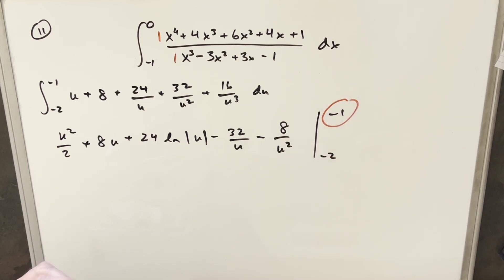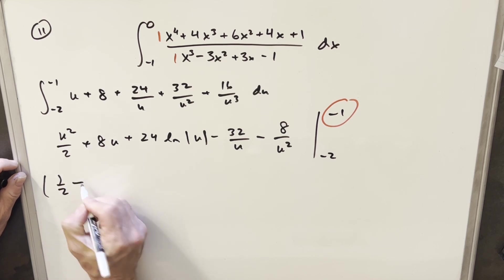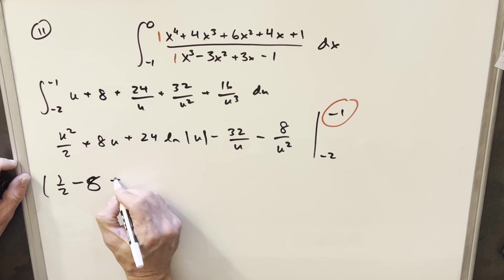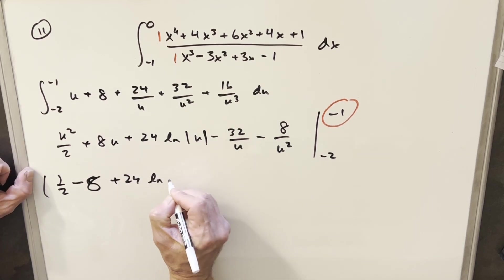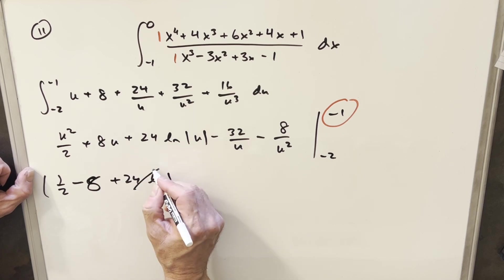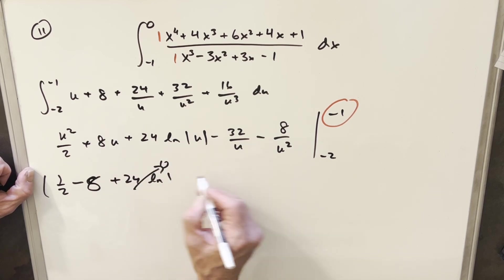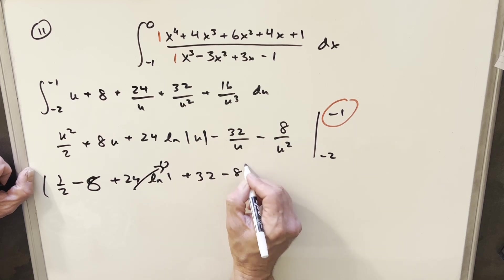Okay, now evaluating at minus 1, we'll just plug that in. So minus 1 here, this is going to give me a 1 half. This is going to be a minus 8 here. Then plus 24, natural log of minus 1, absolute value, this is going to give me natural log of 1, but that's 0. So that goes away. Then here, this is going to become a plus 32. And then here, this is going to become just a minus 8.